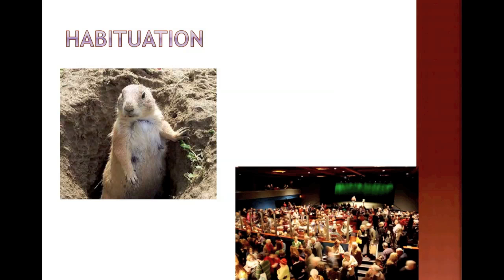Spatial learning is a special type of learning based on geographical landmarks. Our example here is that of a wasp. Scientists put a bunch of pine cones around the wasp's nest, and over time the wasp, instead of flying to the nest directly, flies to the pine cones expecting to find the entrance in the center of those pine cones. What happens if we move the pine cones to a different location? The wasp is still trying to find its way by using those as a landmark — quite a funny situation. It flies to the pine cones expecting to find its entrance, but it's not there.